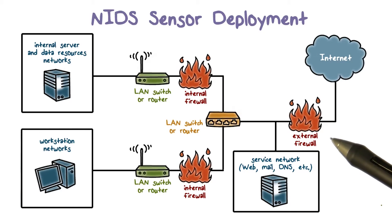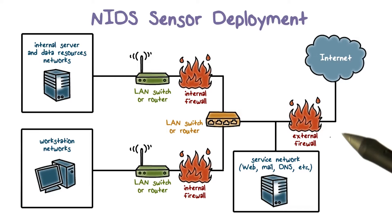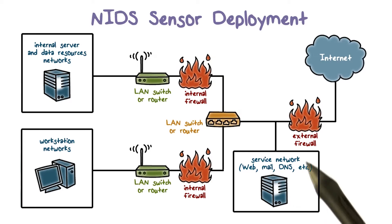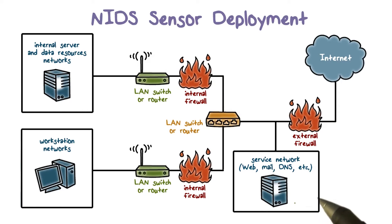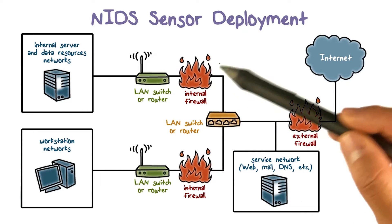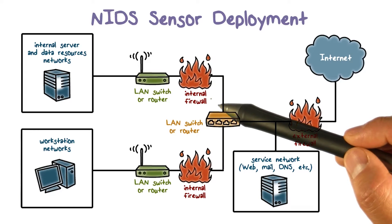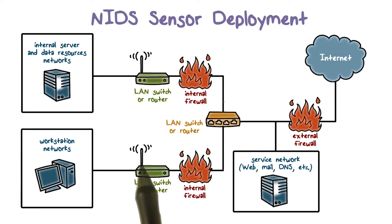Recall our lecture on firewalls. We typically want to place an external firewall to protect the entire enterprise network. We also want to protect the internal network from the public facing servers. These servers are put in what we call a DMZ, and we use internal firewalls to monitor traffic between the internal subnet and the DMZ.